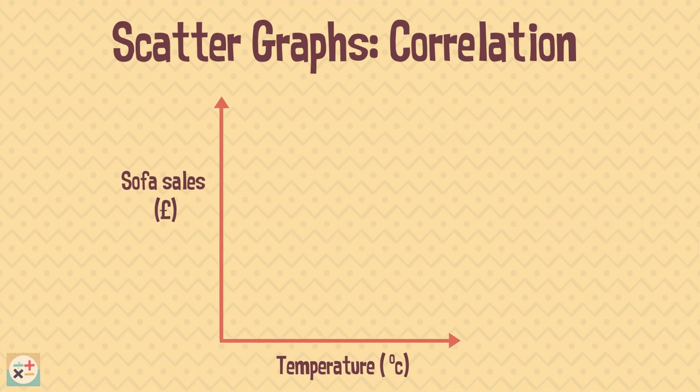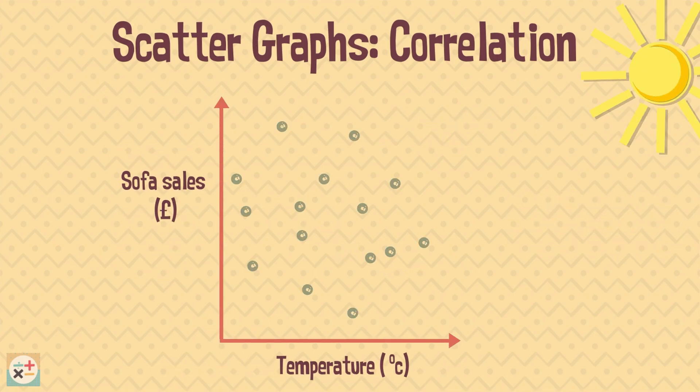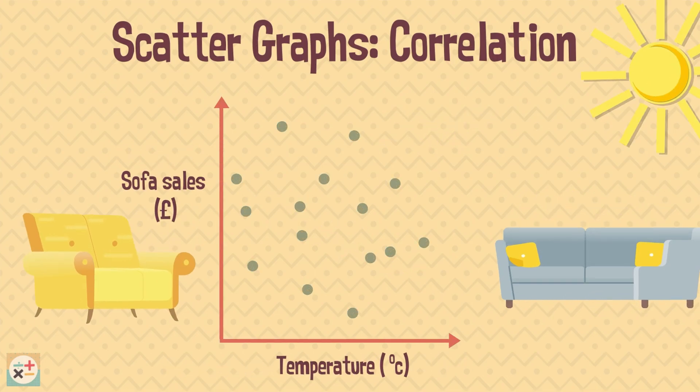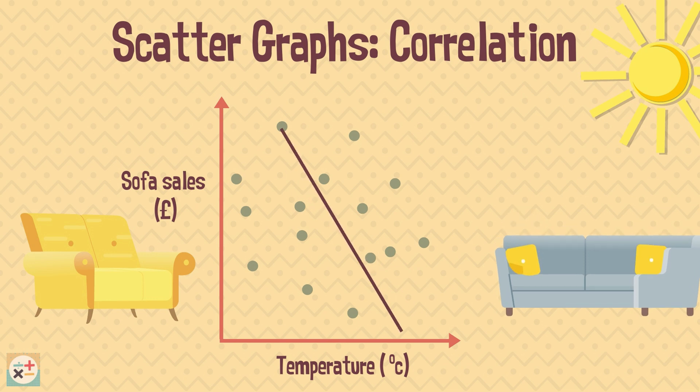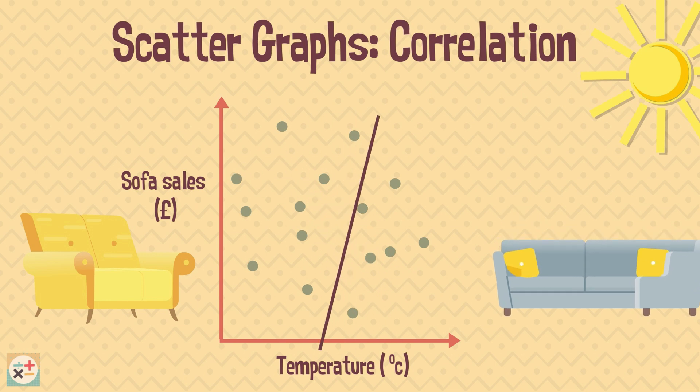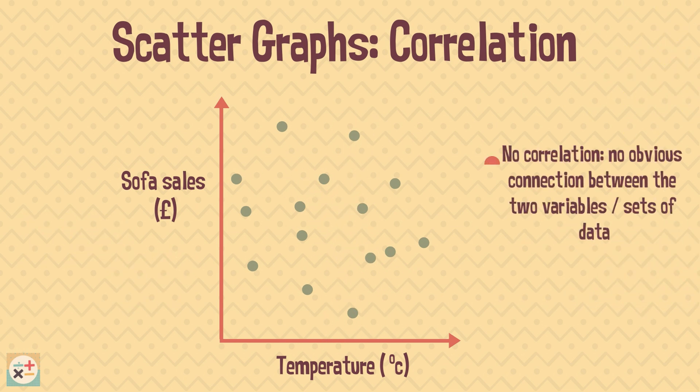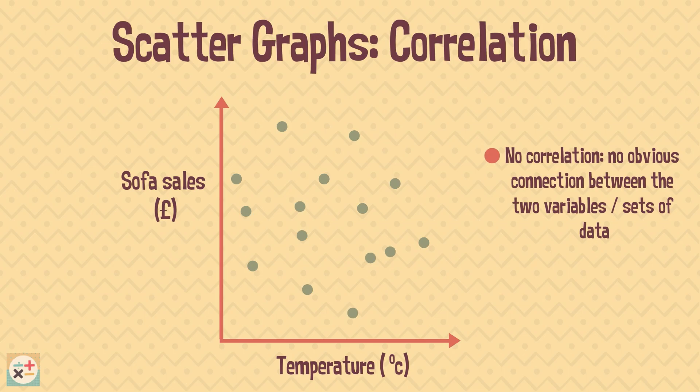What if the scatter graph looked like this? We can see that the sales of sofas has no obvious relationship to the temperature. We would say there is no correlation.